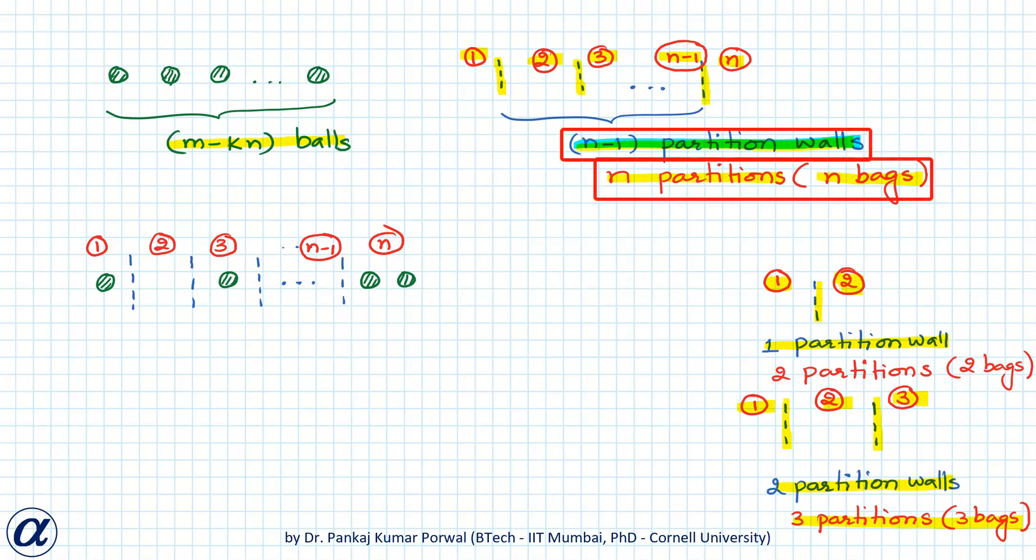For each permutation of these m minus kn balls and n minus 1 partition walls, the number of balls lying in the kth partition will go to the kth bag. So that will give us the number of ways of putting m balls in n bags such that each bag has at least k balls.